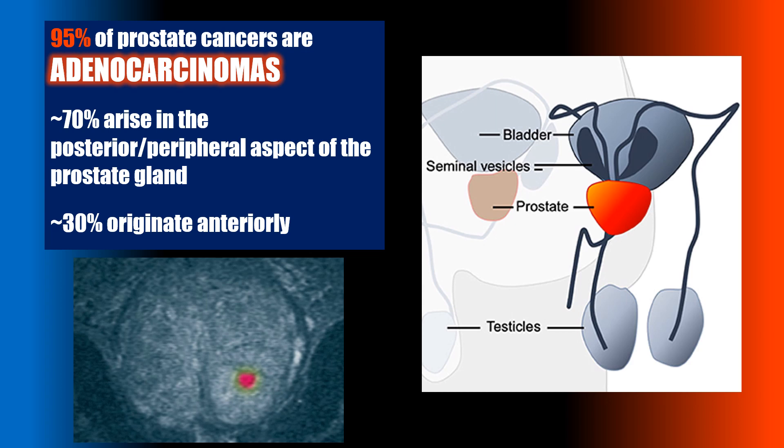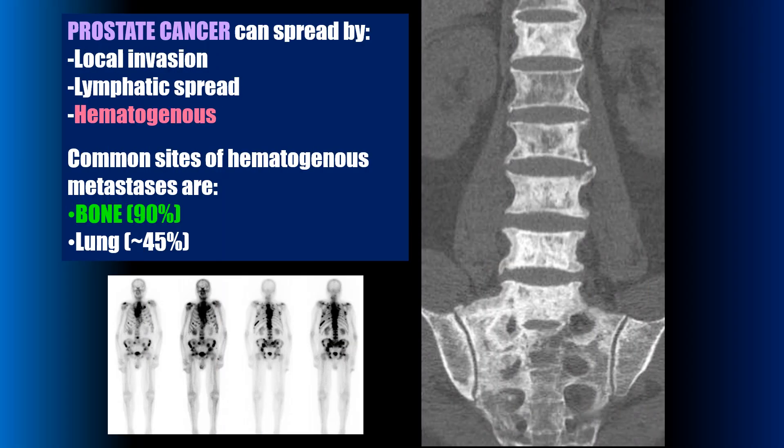95% of prostate cancers are adenocarcinomas, and approximately 70% of these are around the posterior peripheral aspect of the prostate gland versus approximately 30% which originate anteriorly. Prostate cancer can spread by direct or local invasion, lymphatic spread, or hematogenously through the blood. The common sites of hematogenous metastasis are bone and the lung.